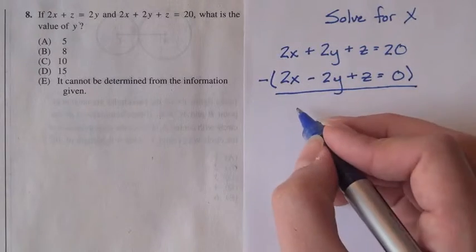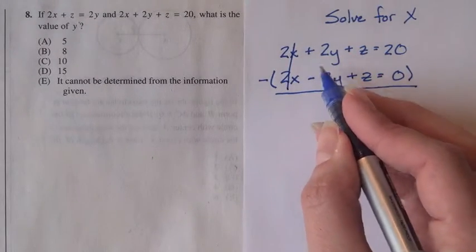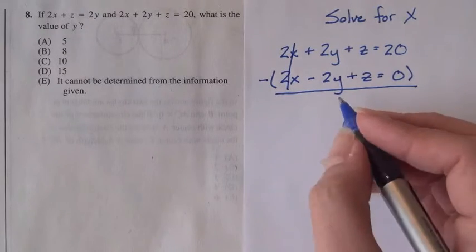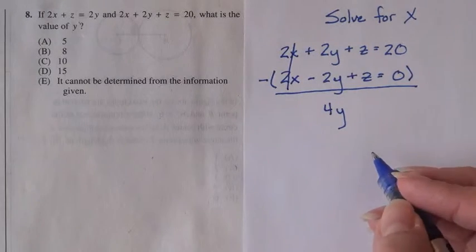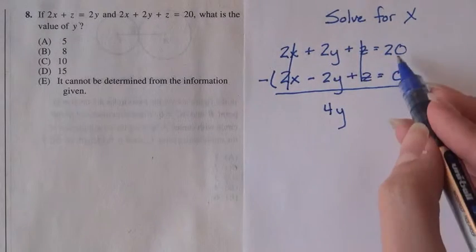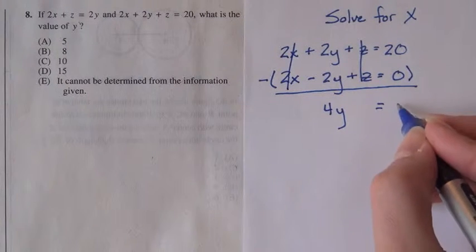2x minus 2x is zero, so that'll cancel out. 2y minus negative 2y is 4y. z minus z is zero, so that'll cancel out. 20 minus zero is 20.